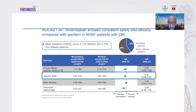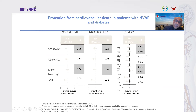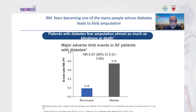Since 65% of diabetes is related to cardiovascular disease, reducing cardiovascular and vascular events is a great achievement seen with rivaroxaban in ROCKET-AF. Comparing across three trials — ROCKET-AF, ARISTOTLE, RE-LY — cardiovascular deaths were significantly reduced in favor of rivaroxaban. Regarding limb amputation, a major fear for diabetic patients, major adverse limb events in AF patients with diabetes were also reduced in favor of rivaroxaban versus warfarin — demonstrating vascular protective effect.